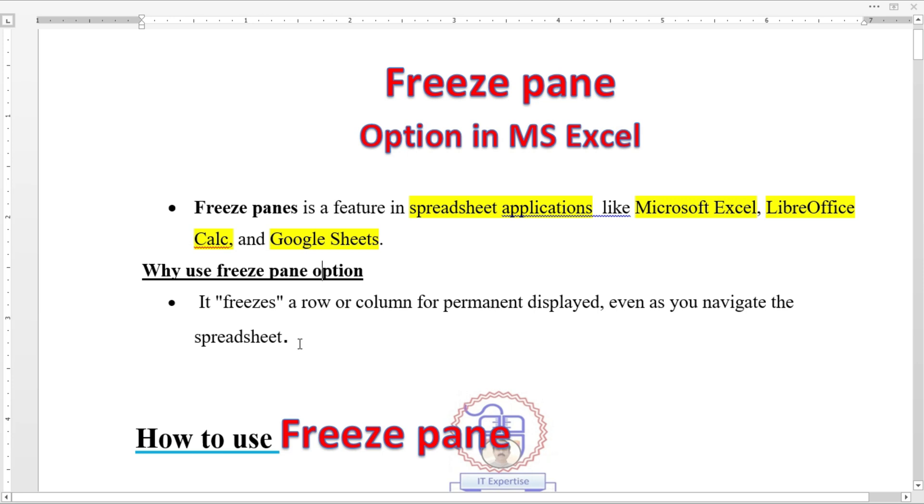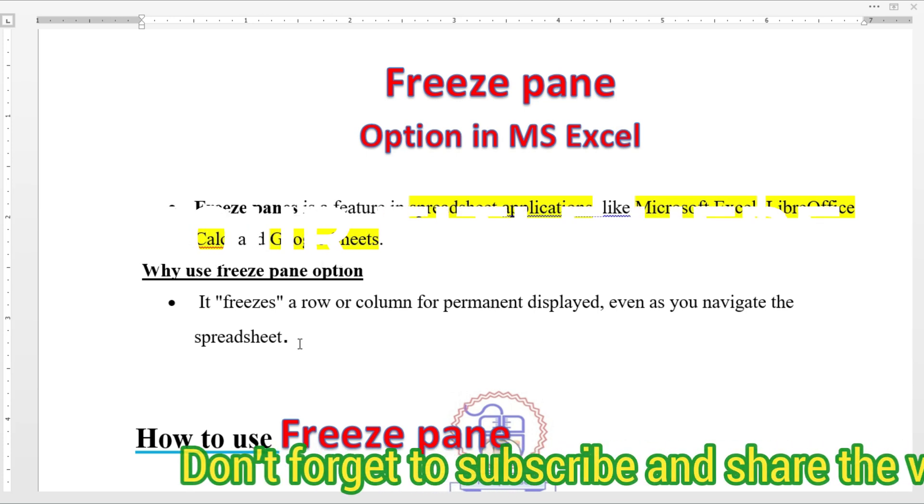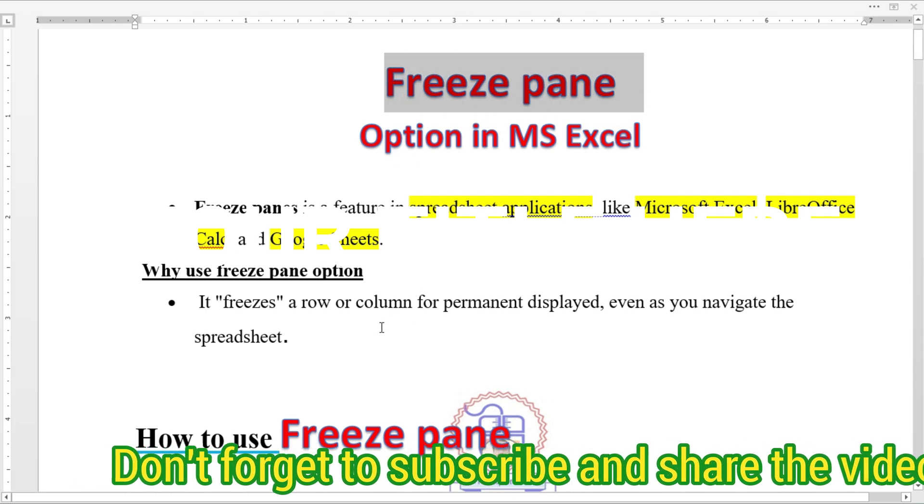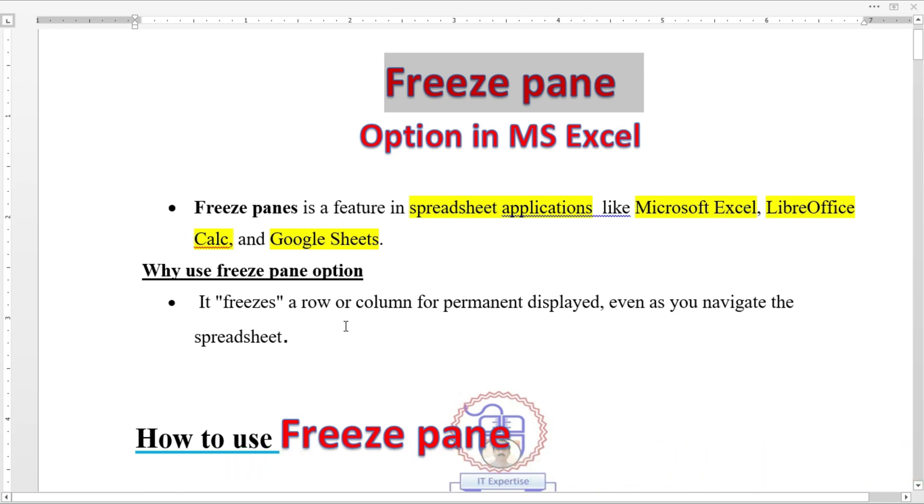When you apply navigation, the first row or first columns go behind the screen and you can't see them. So this freeze pane helps you keep them permanently on the screen.